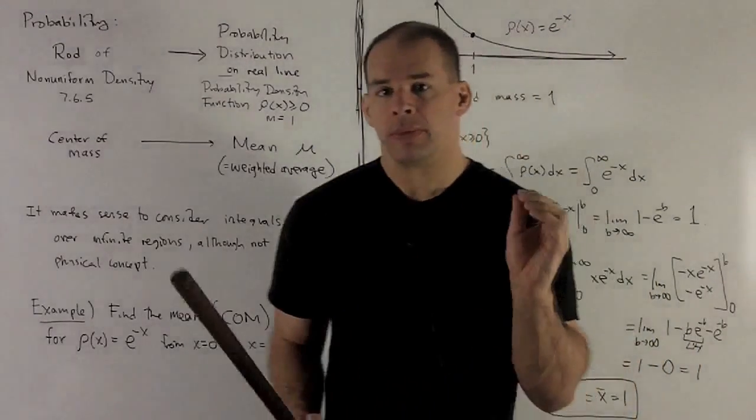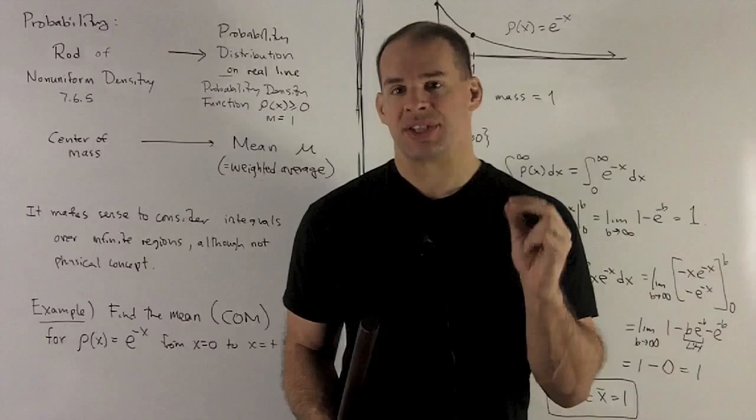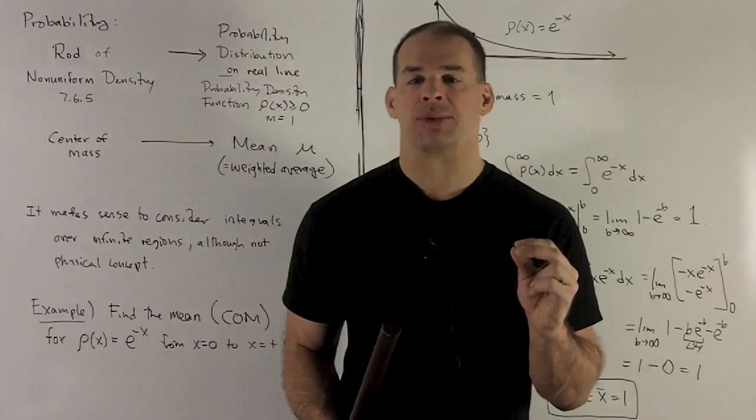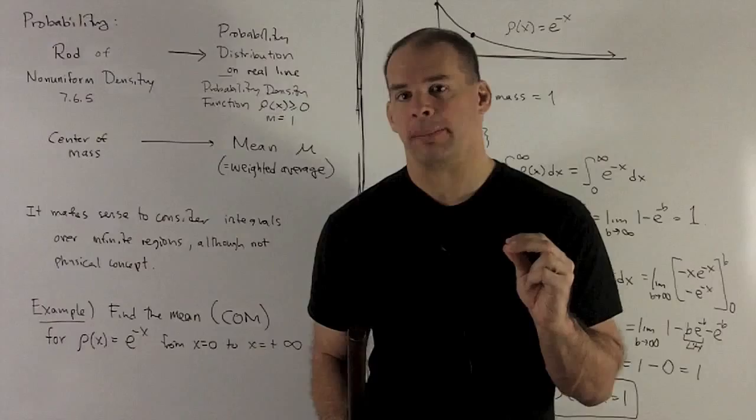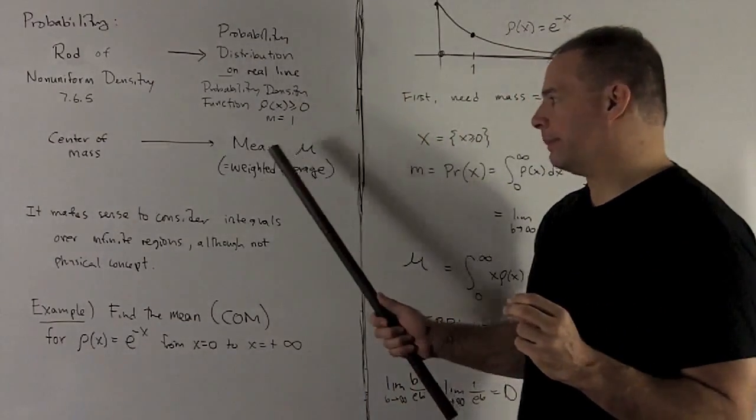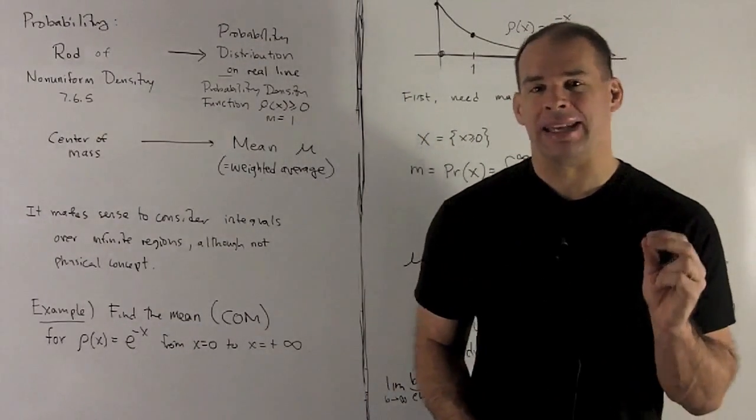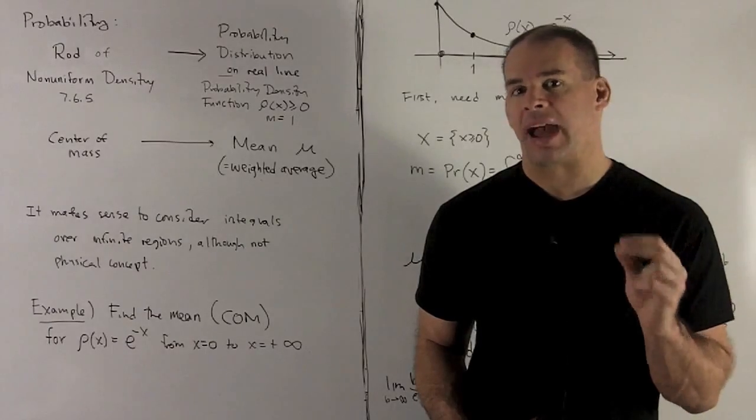So the problem we're interested in is how do we find a center of mass for one of these objects? Well, for probability theory, we don't talk about center of mass. Instead, we talk about the mean, denoted by mu. Same idea. It's just going to be a weighted average.